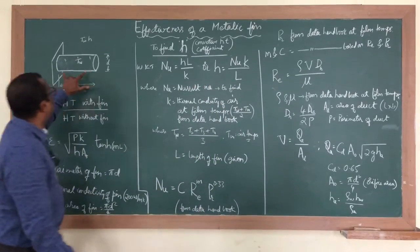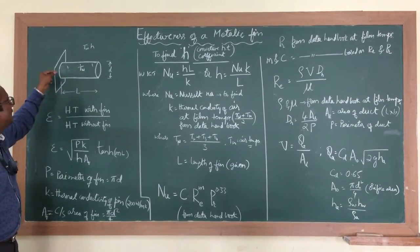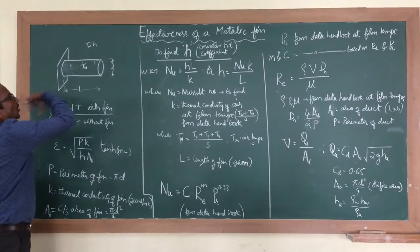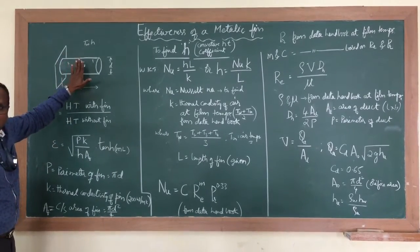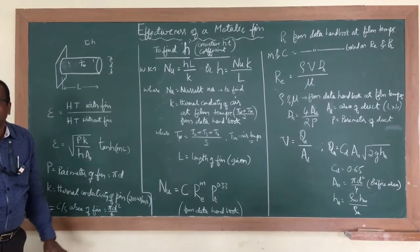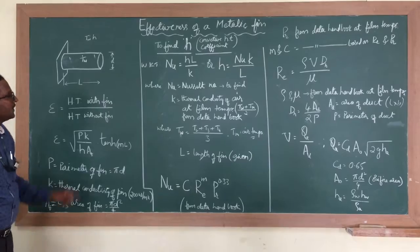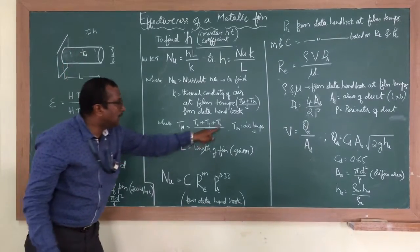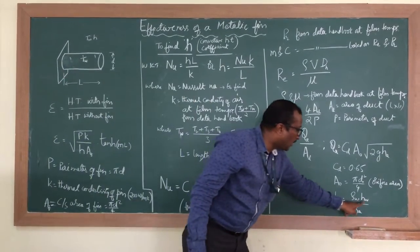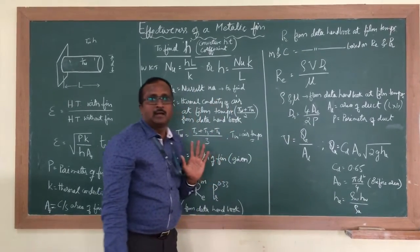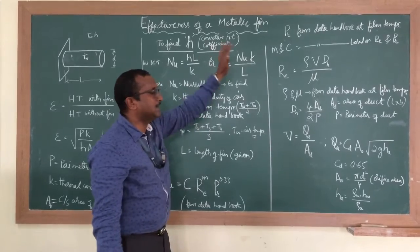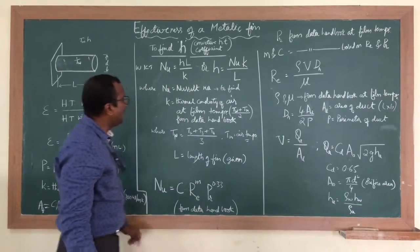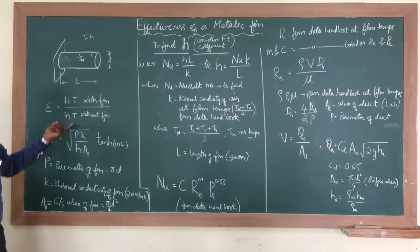So once you conduct the experiment, you switch on the power supply to heat the fin at its base using the heater coil. You also switch on the blower so that air is blown over the pin fin. The electrical heat heats the pin fin and the heat is transferred to the air. After steady state is achieved, you note down the temperatures and the head of water. Those are the only readings taken from the experiment; all other data are taken from the data handbook.